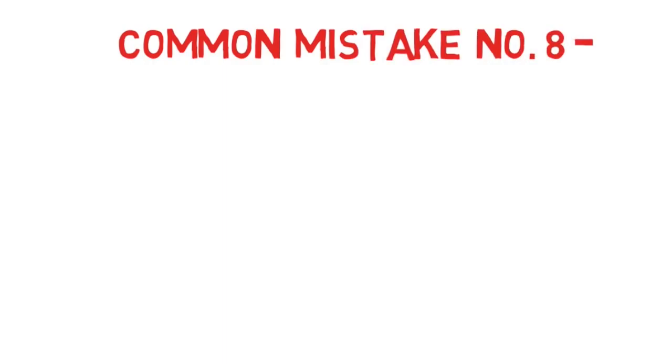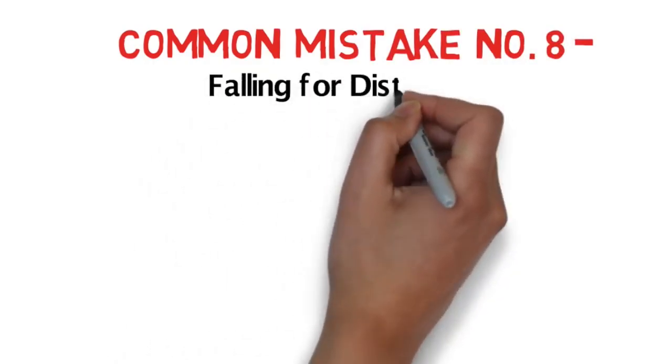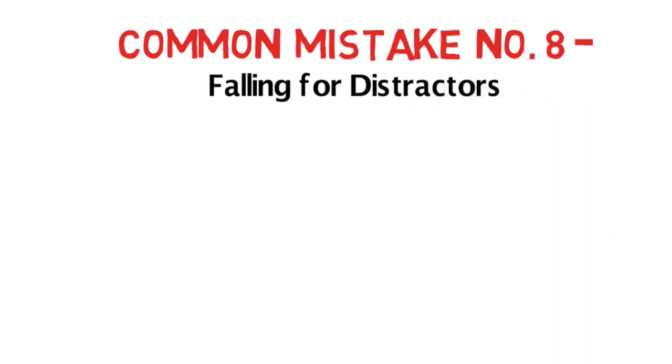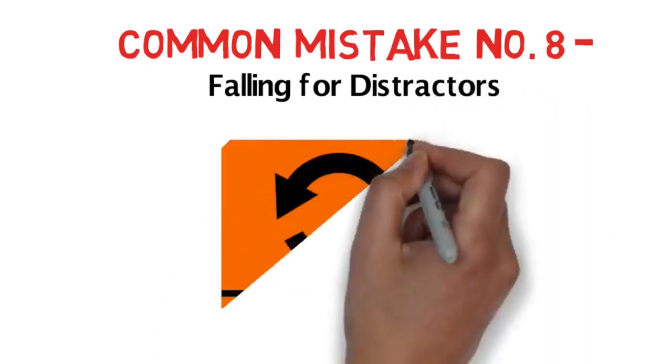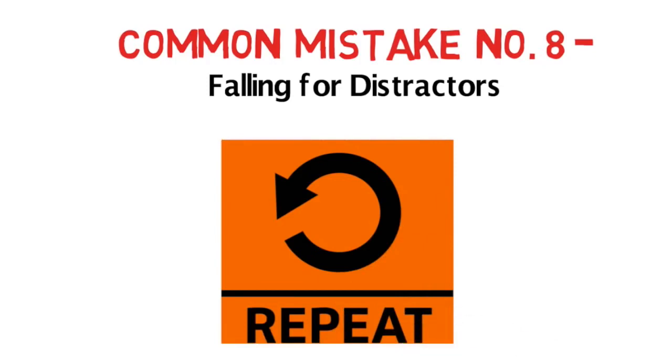Falling in trap of distractors can be dangerous for your score too. Usually, the distractors are when they speak something and they repeat that or they try to correct it. Usually they try to frame questions from there and these work as the distractors. So ideally, you should not mark the answer for the first thing that you have listened. Rather, you should listen carefully, pay attention, stay patient and then answer.